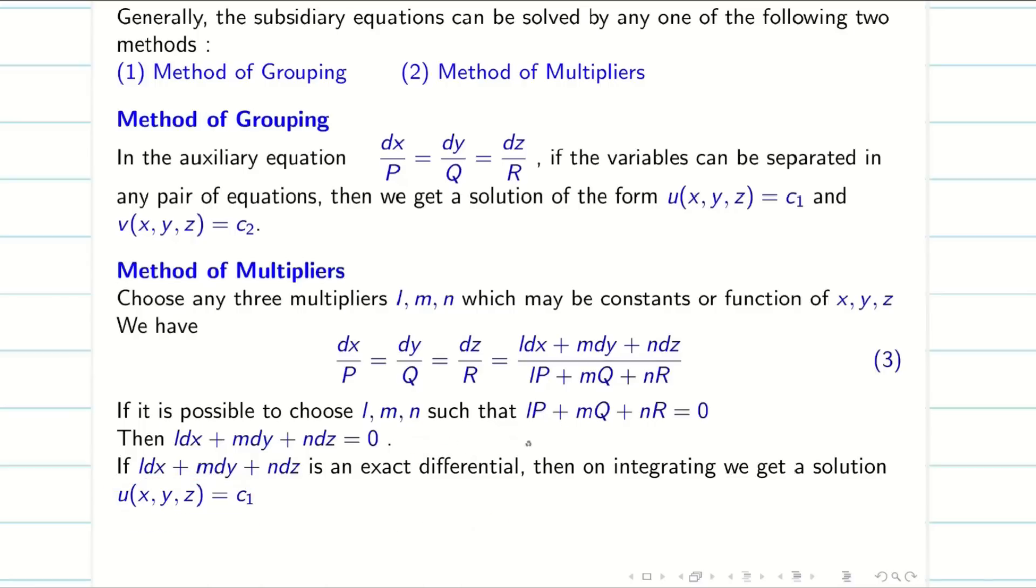Similarly, we have to choose some other L, M, N values such that LP + MQ + NR becomes zero again. Then I can find v. If you find both u and v, then the general solution is f(u, v) = 0.